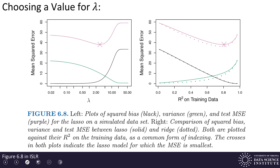How do we choose a value for lambda? On the left-hand plot we can look at mean squared error from cross-validation as a function of lambda, shown here for simulated data. We pick the value of lambda that gives us the least cross-validation error. The reddish-colored curve — textbook figure 6.8 calls it purple — is the test mean squared error, and the point marked with an X on that curve is where we get minimum error. We then pick lambda to be the value right below that point.